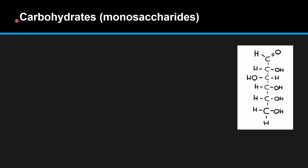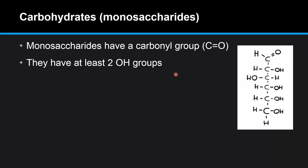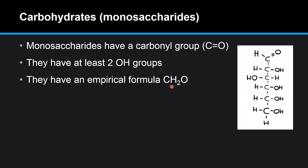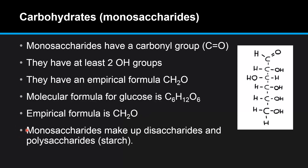Next, we'll have a look at the composition of carbohydrates, specifically monosaccharides. Here we have a molecule of glucose, which is a six-carbon sugar. Monosaccharides have a carbonyl group — a C double bonded to an oxygen — which you can see here in the glucose molecule. They have at least two OH groups; glucose has five. They have an empirical formula of CH₂O. The molecular formula for glucose is C₆H₁₂O₆, therefore the empirical formula is CH₂O. Monosaccharides make up disaccharides and polysaccharides, and starch is an example of a polysaccharide.